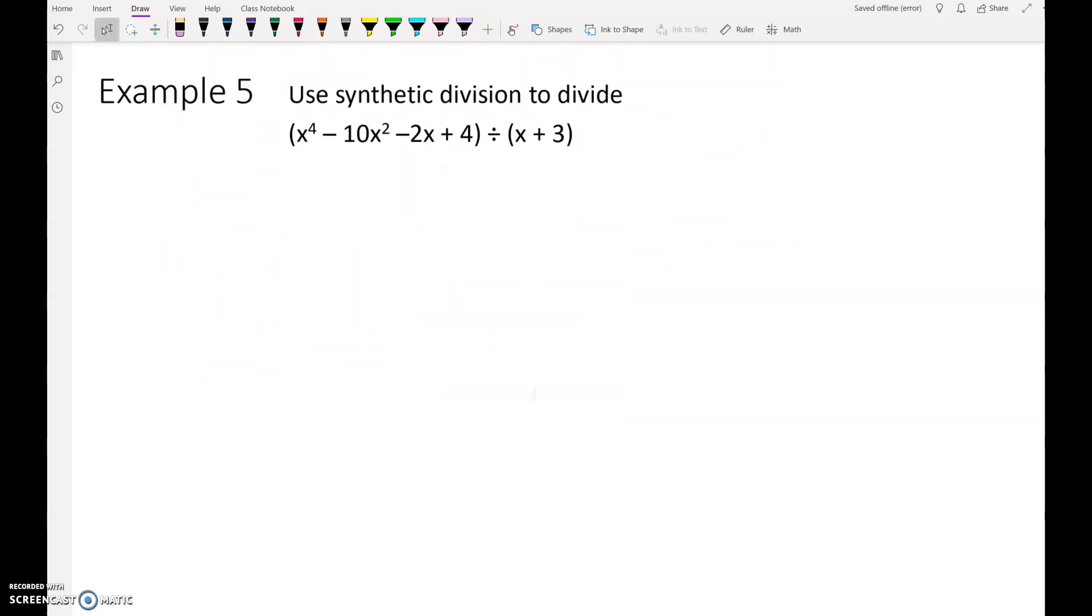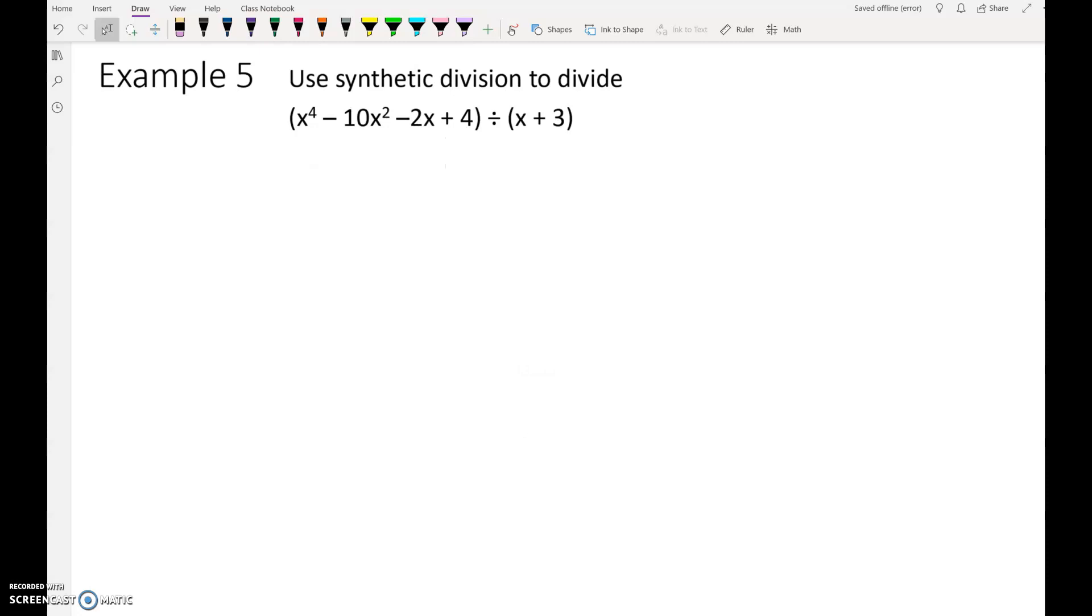Let's move on to the next example. Use synthetic division to divide x to the fourth minus 10x squared minus 2x plus 4 divided by x plus 3. The first thing that you need to check, the most common mistake that is made with synthetic division and with long division, is to forget about missing terms. If we start with x to the fourth, we need to make sure we have x to the third, x squared, x and a number. Are we missing anything? In between these two terms, there should be an x to the third. So there's a 0x to the third in there that we need to remember.